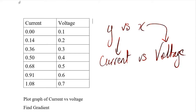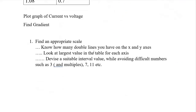To plot our graph, we need to develop our scale. To find our appropriate scale: first, you have to know how many double dark lines you have on your x and y axes. After that, you look at the largest value on your table for each axis, and you devise a suitable interval value while avoiding difficult numbers. You have been mandated by CXC to avoid numbers like 3, multiples of 3, 7, 11 — things that are very difficult to divide, or numbers that give you long recurring decimals.